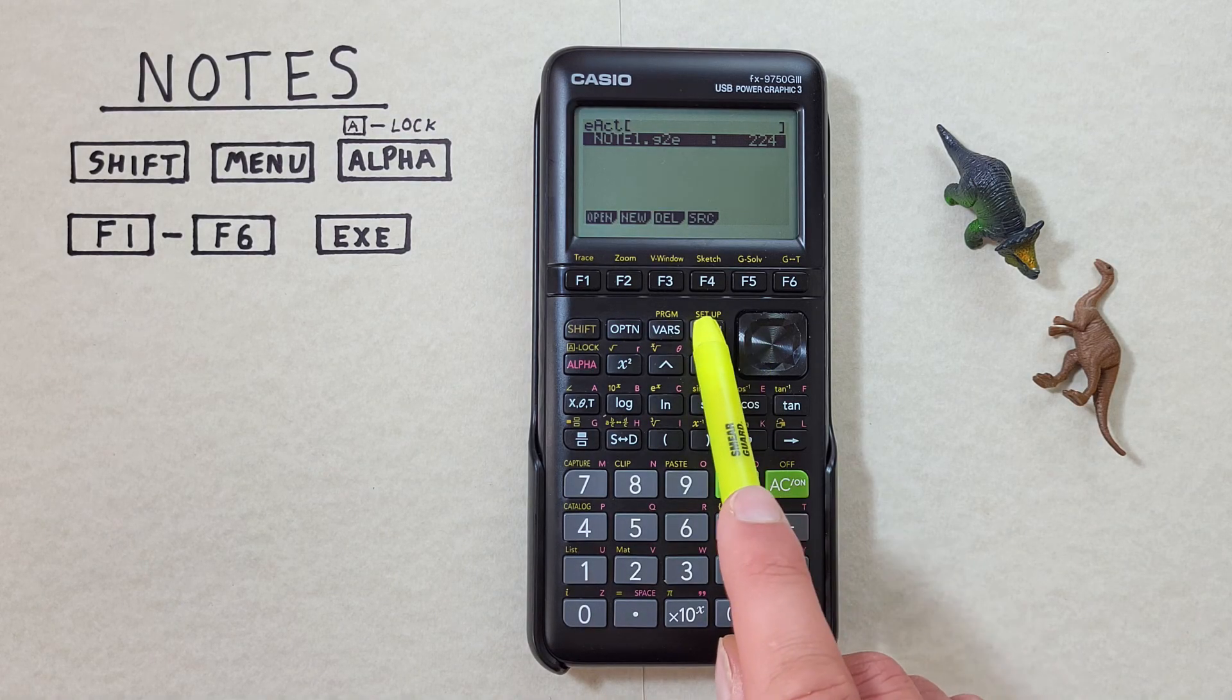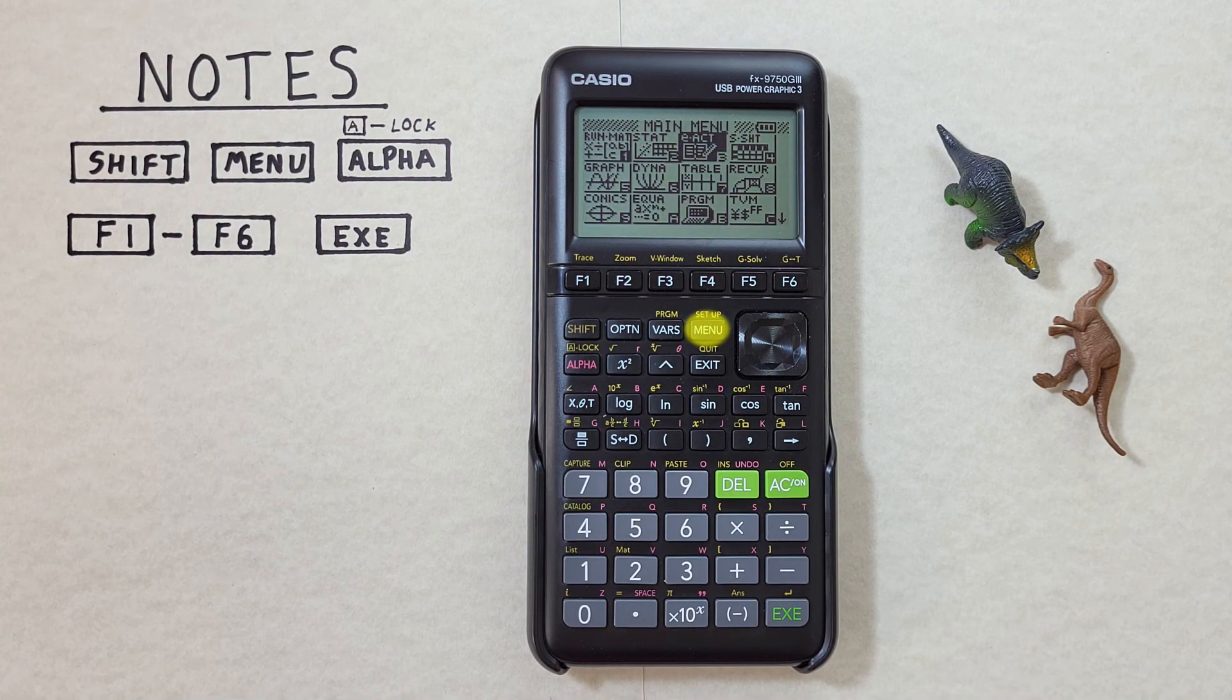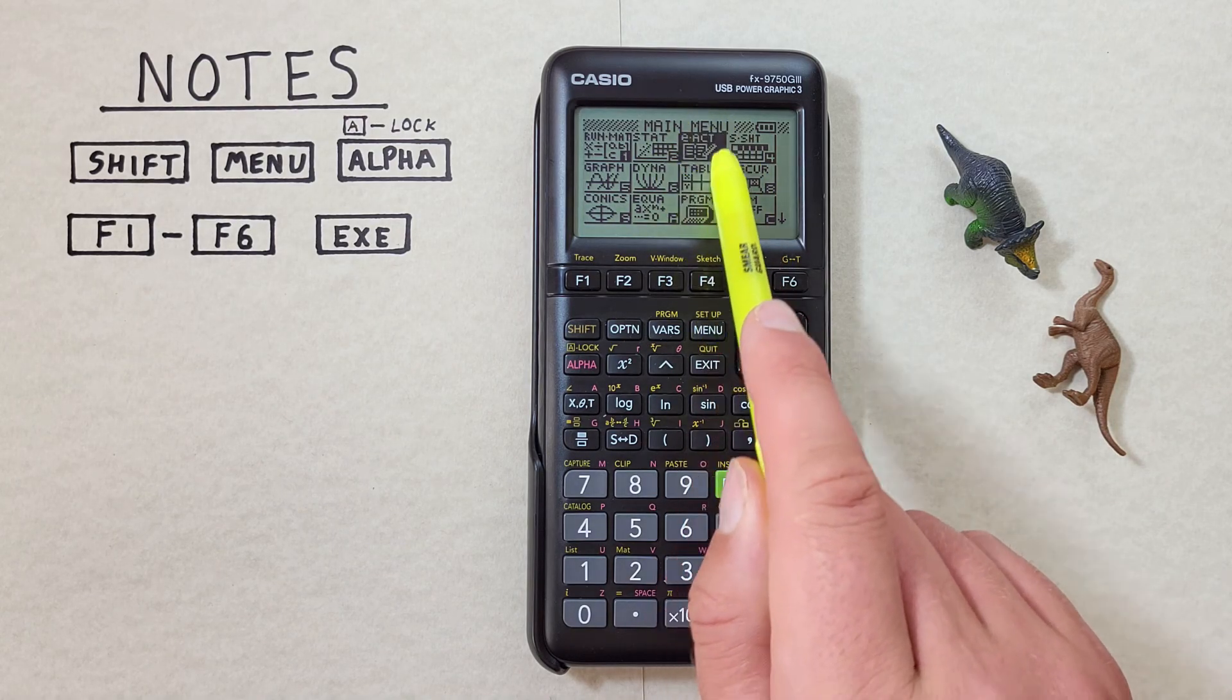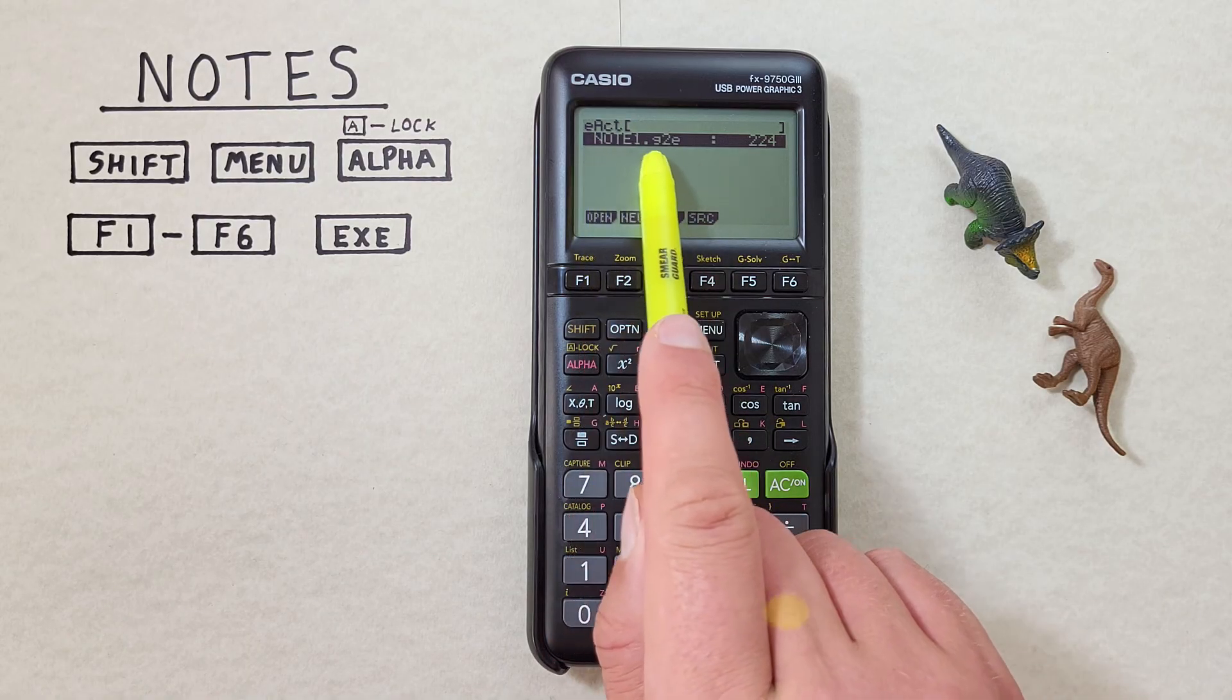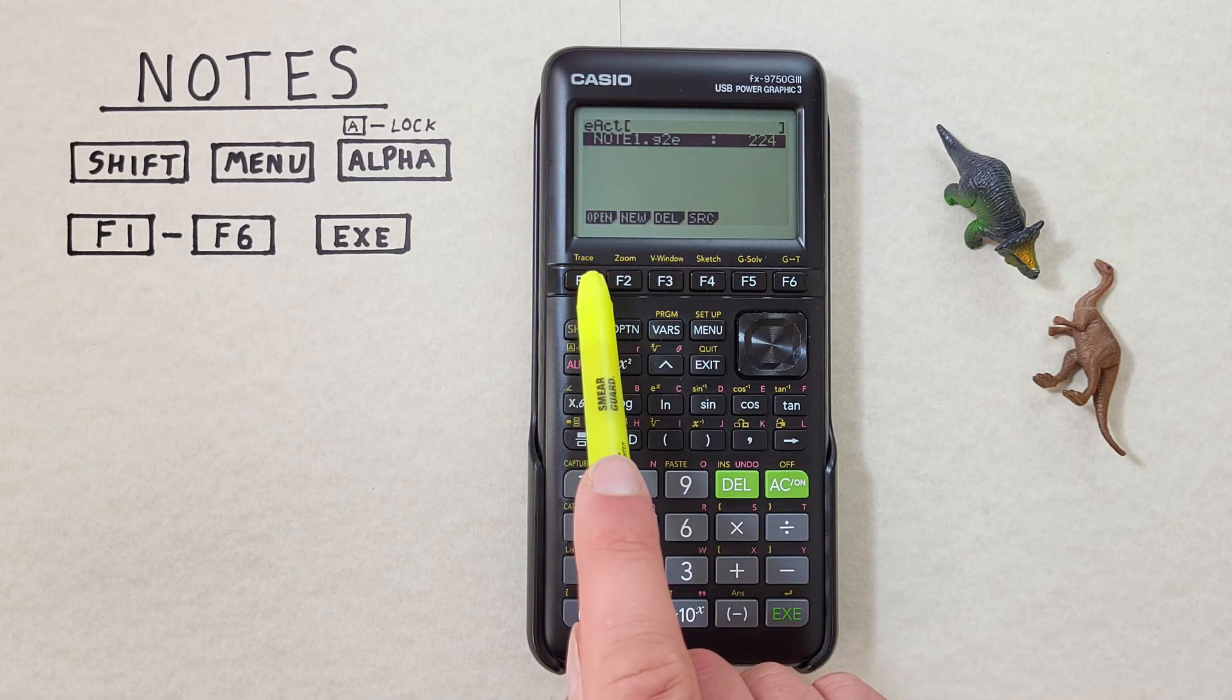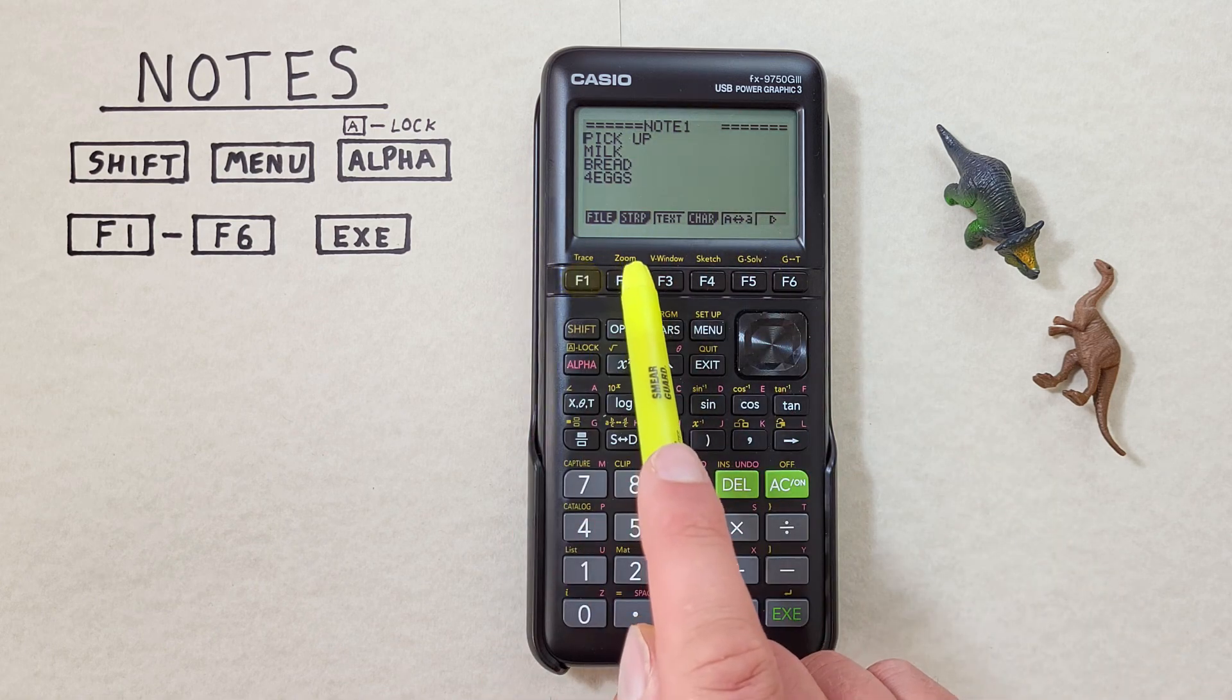Now if we go back to our main menu and want to open our note later on, we can again go to EACT here. Highlight our note one. And press F1 to open it. And there we go. There's our note.